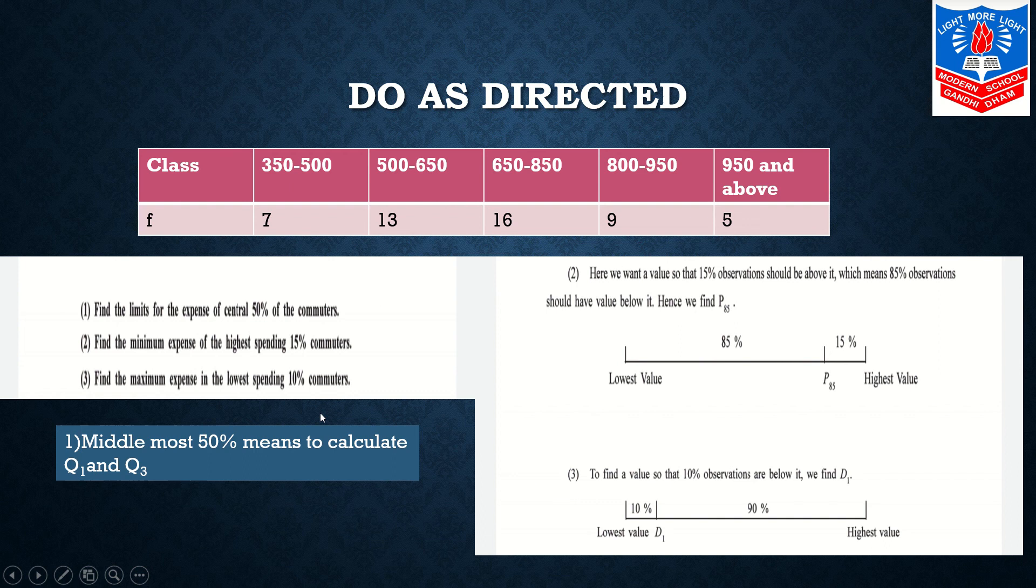Next is to find the maximum expense in the lowest spending 10% commuters. To find the value so that 10% observations are below it. Below means lower values, beginning values. Beginning values are always smaller. You see the question, 350 to 500 values are less. As we go forward, classes increase. So over here the lowest value is D1. Below is always in the beginning. So lowest value D1. Remaining is 90%, that is 100 minus 10, you will get 90. So 90% the highest value. So over here you will be finding out D1.